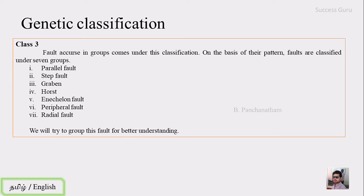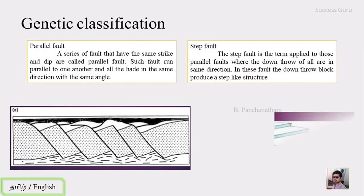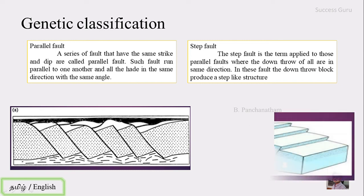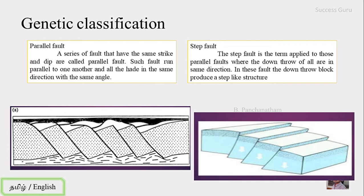The third genetic class groups faults together. There are seven types to be grouped. The parallel fault is a series of faults with the same strike and dip, running parallel to one another, all heading in the same direction with the same angle. The step fault is similar to a parallel fault, but the main difference is that the displacement increases as you move further along.